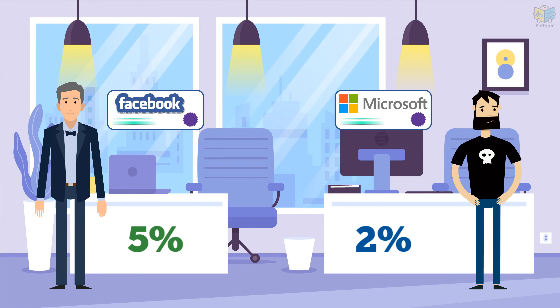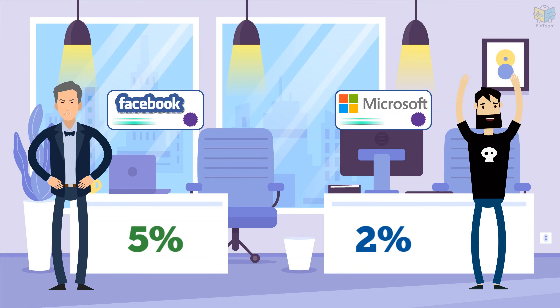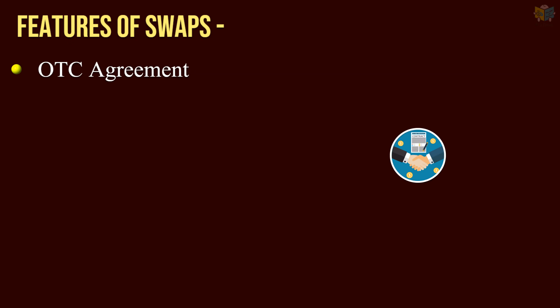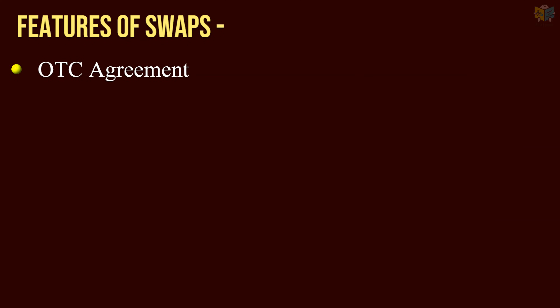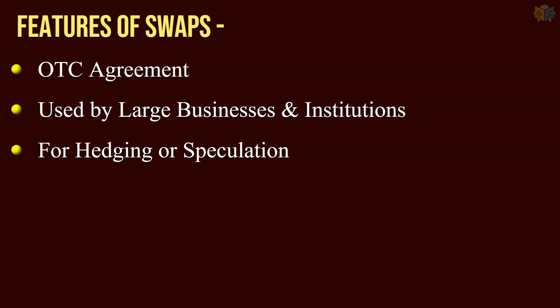However, like any other derivative contract, only one of them will experience a favorable outcome. In this case, Mr. Finn is a net loser and was better off without the swap contract. Swaps are OTC contracts and do not trade on exchanges. These contracts are customized to suit the needs of both the parties. Such contracts are usually used only by large businesses and institutions for hedging or speculation.